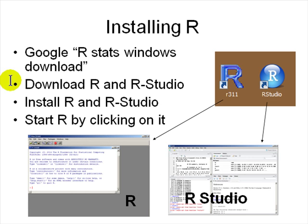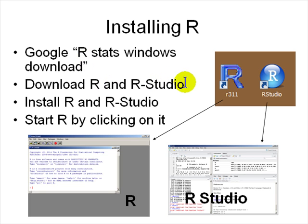Since R is a single letter, it's hard to Google. So you search 'R stats' — for statistics — and 'Windows download' if you're installing on Windows. You'll find R and also look for R Studio, which is a nice UI. Download them and install both R and R Studio.